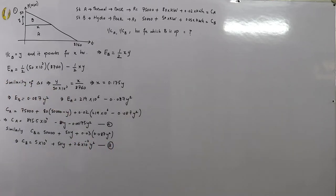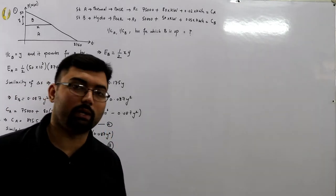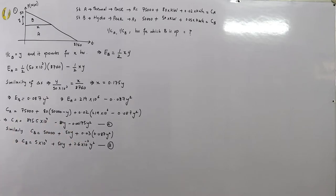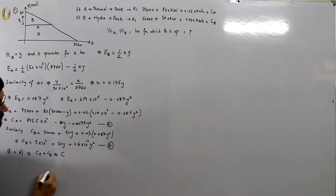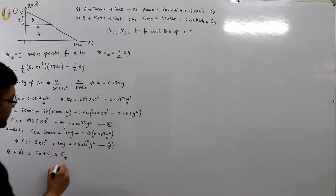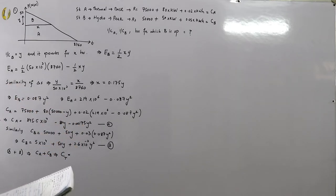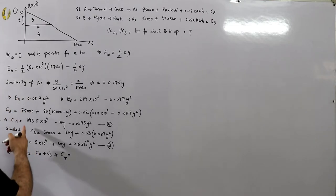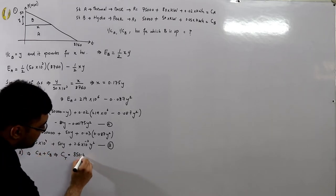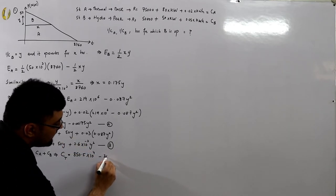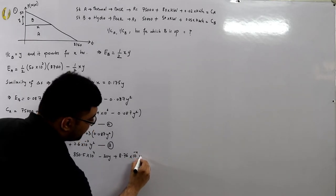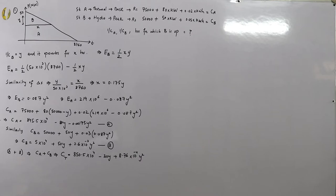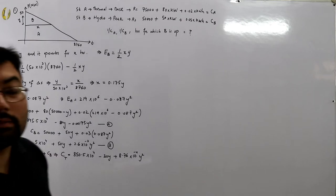For hydrothermal coordination we add the two cost models: C_total = C_A + C_B. This gives: C_total = 850.5 × 10⁴ − 30Y + 8.76 × 10⁻⁴ Y².